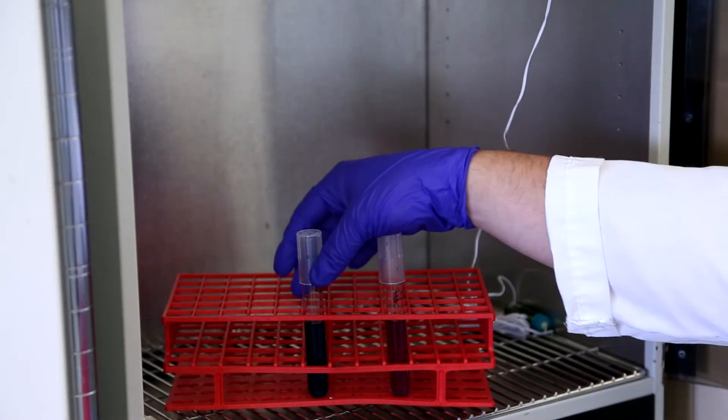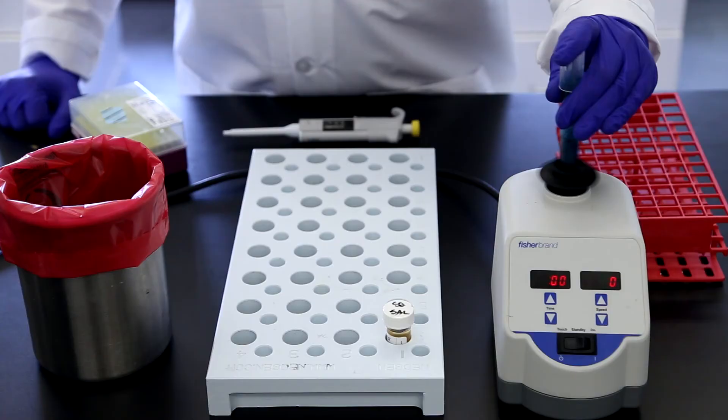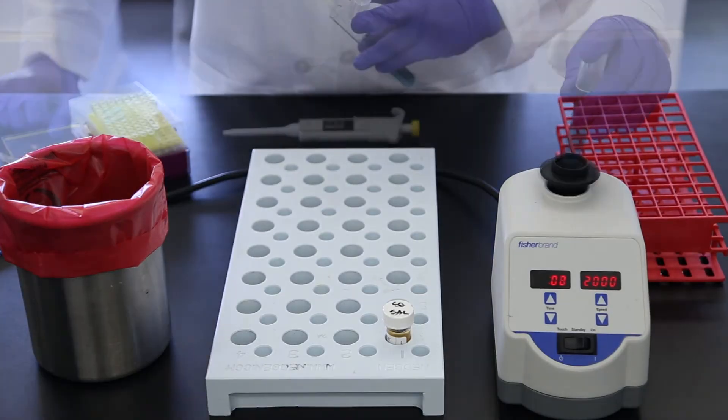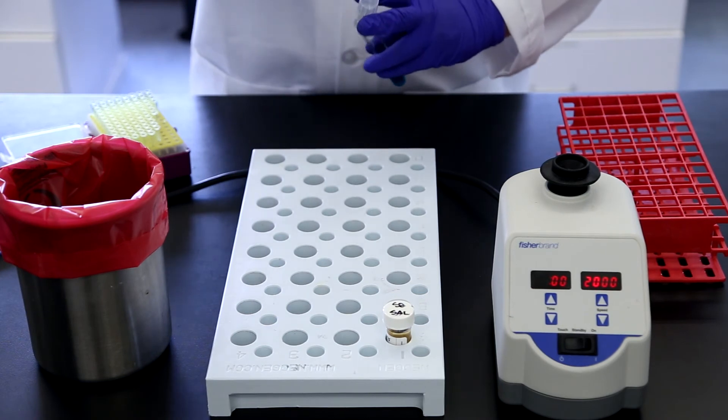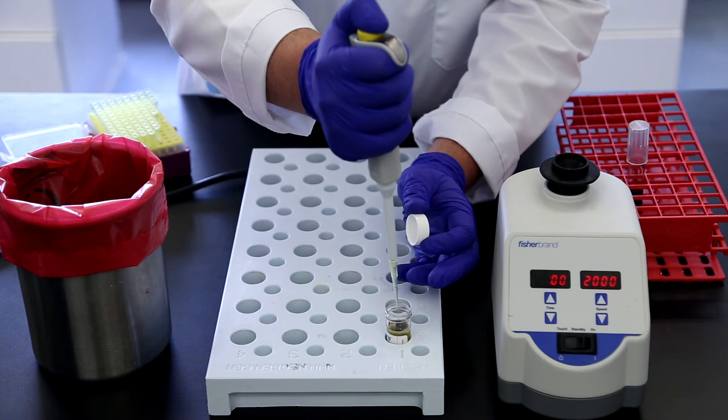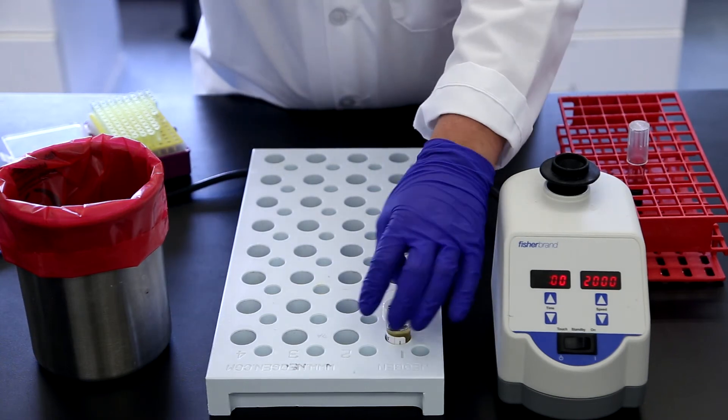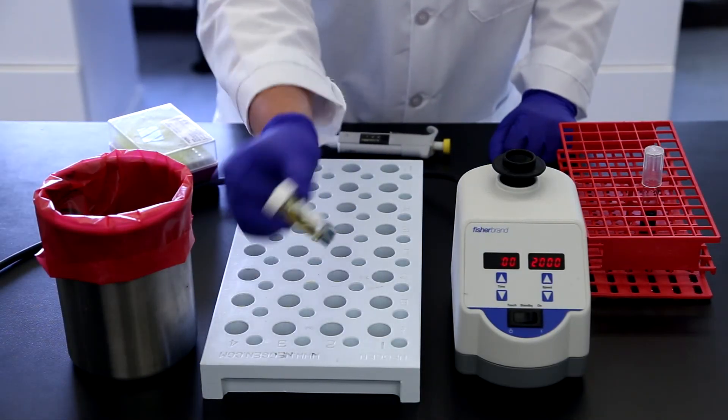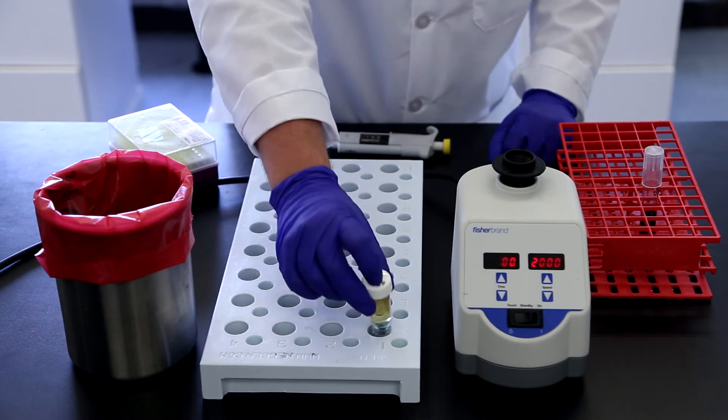Remove the RVS secondary enrichment from the incubator and mix well. Transfer 0.1 milliliters to the S2SAL vial, and gently invert the vial three times and place back into the vial rack.